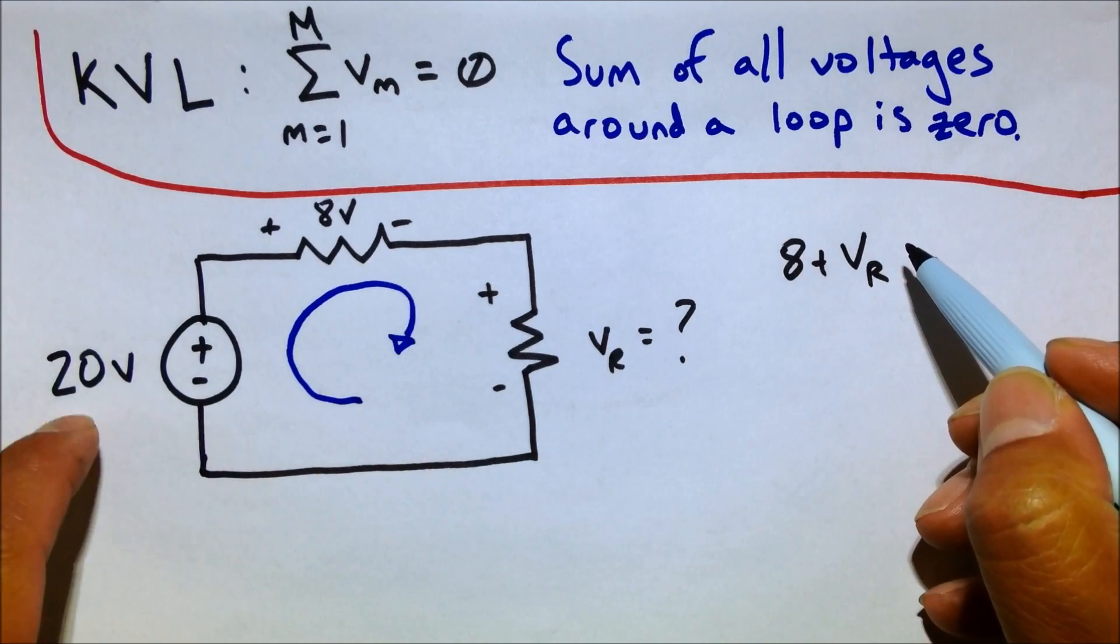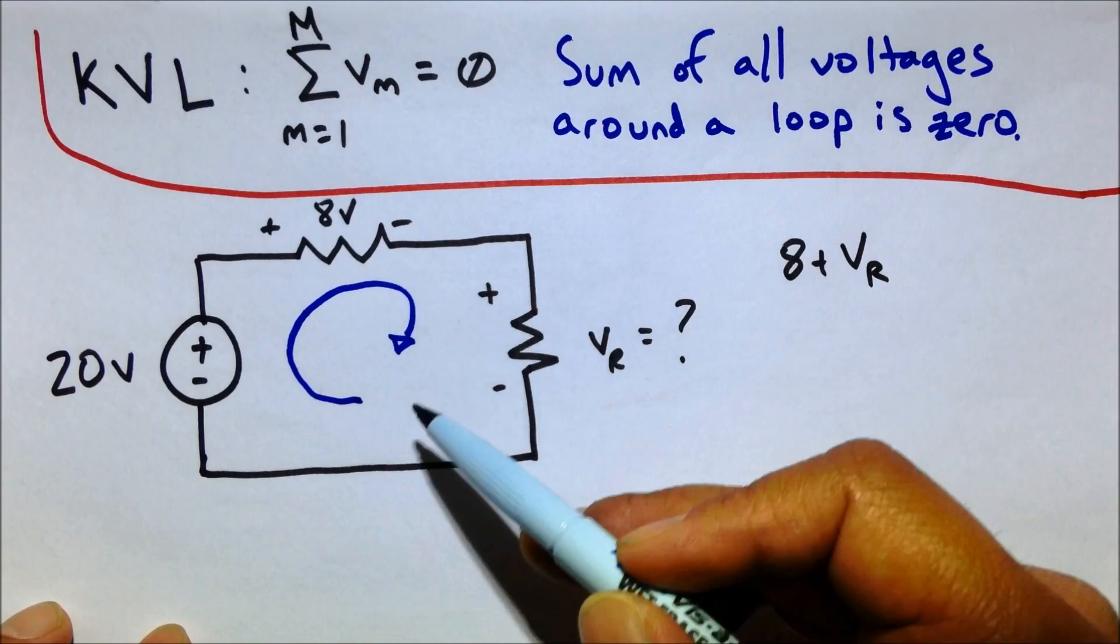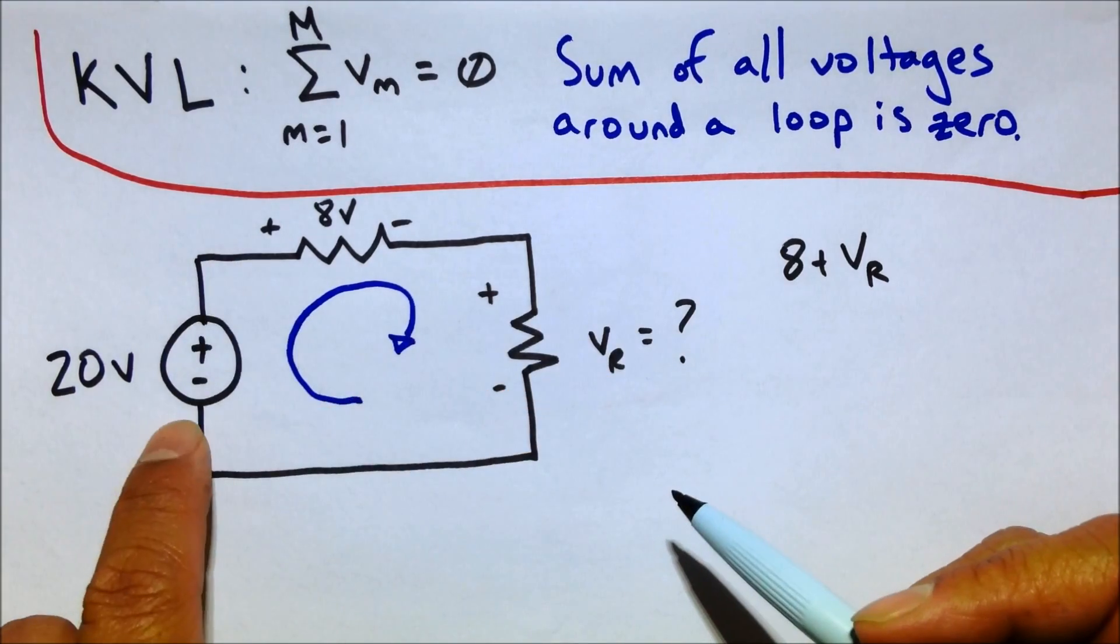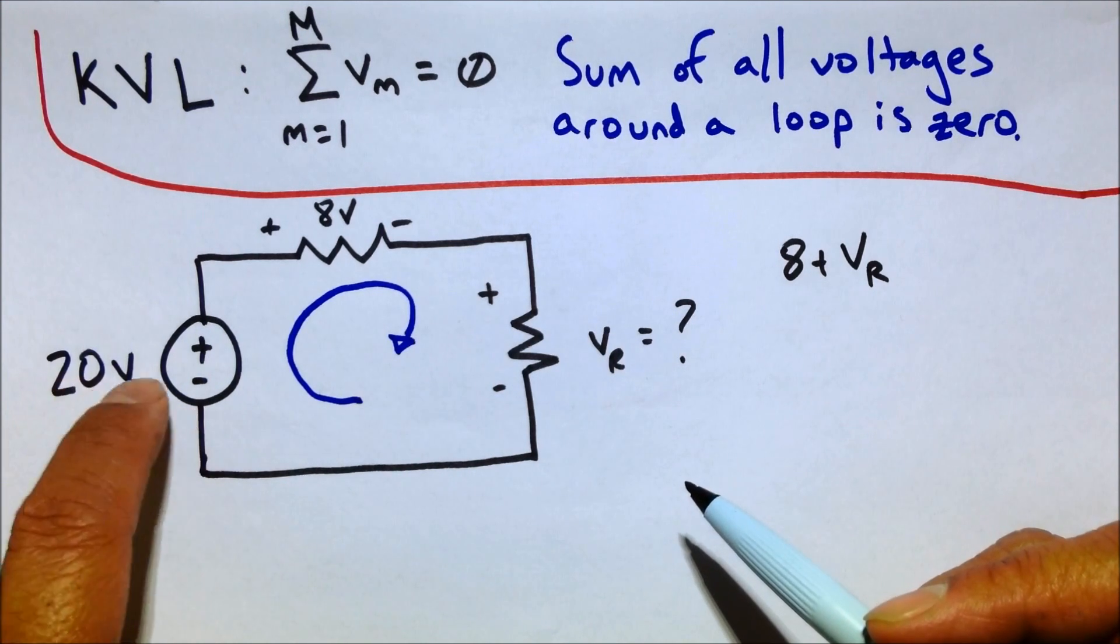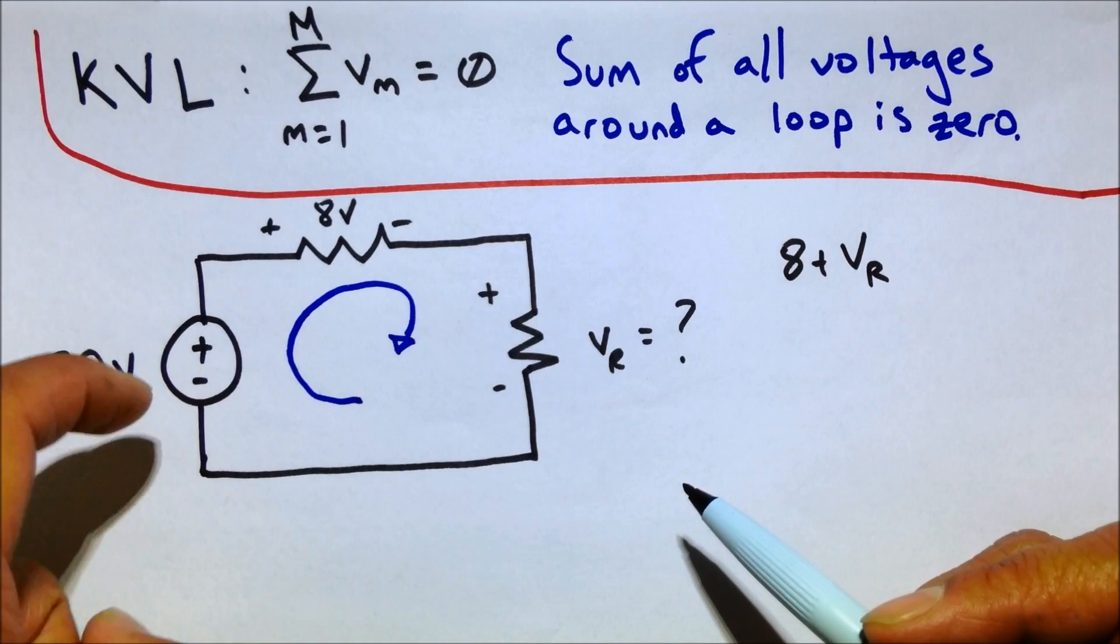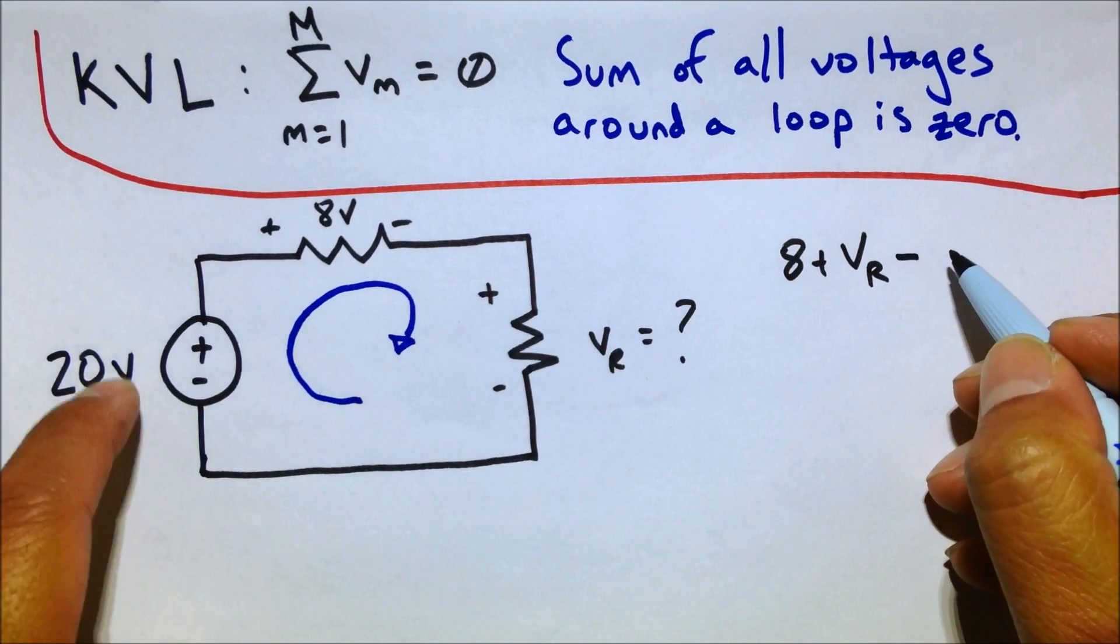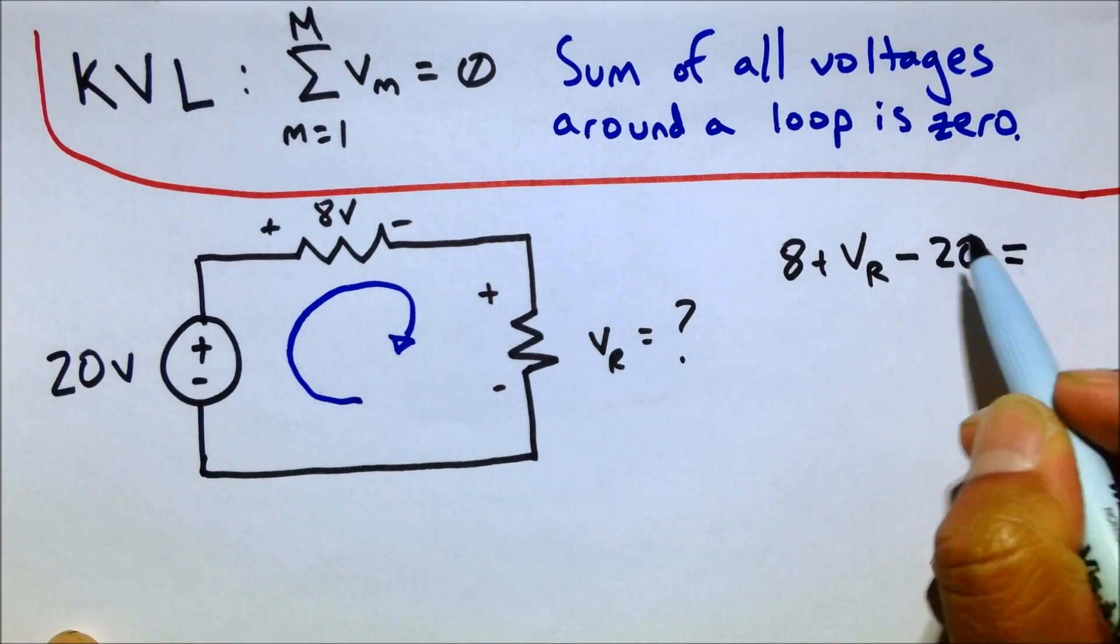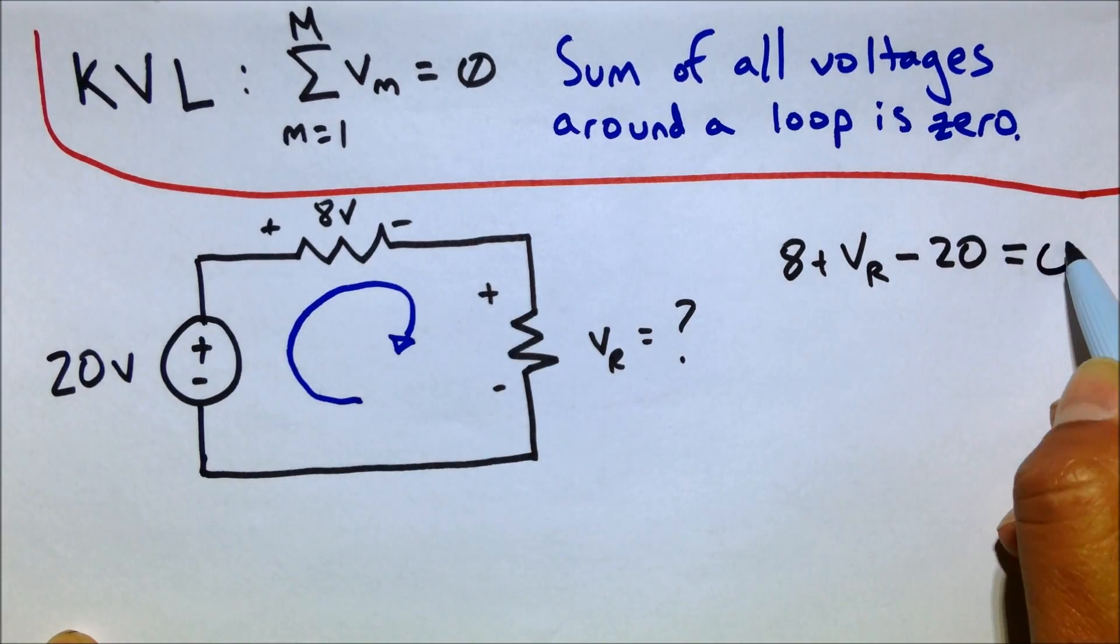Now, how about here? Well, that's a 20 volt source. But notice the polarity. Current is going, the loop's direction is going this way through it. But the voltage, 20 volts, is actually going from here to here, down this way. So that means we have to consider that as a loss, minus 20 volts. And if we add up all the voltages around the loop, that has to equal to zero.